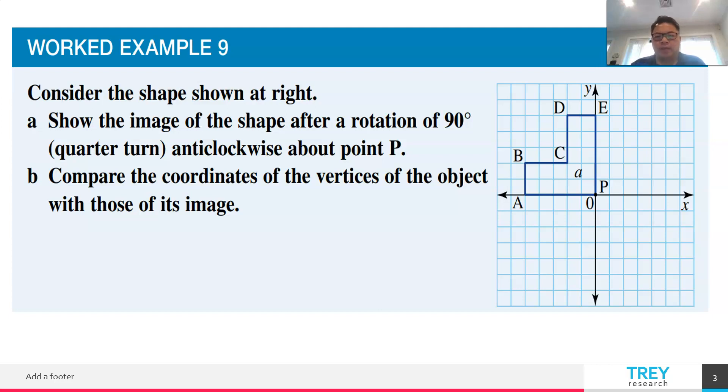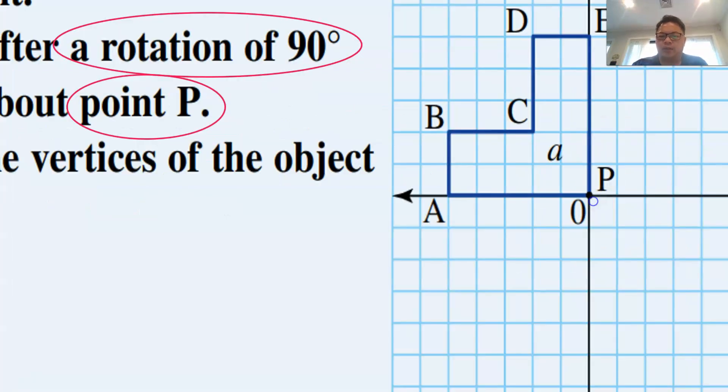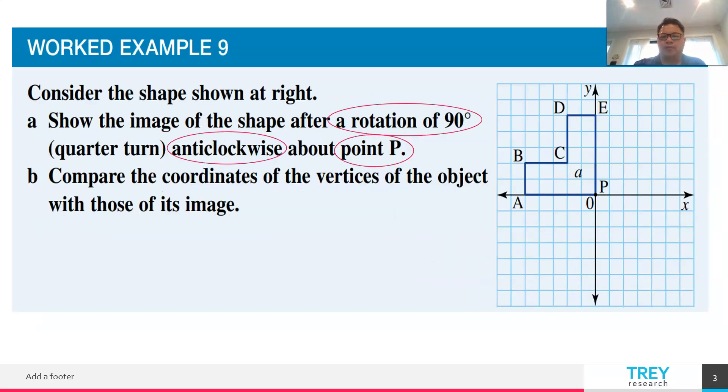I'm going to use this as an example. You are given this special L-shape on the Cartesian grid. We need to rotate. There are a few instructions given to you: a rotation of 90 degrees quarter turn, anticlockwise. There's a very important instruction, anticlockwise, and the reference point is P. As you can see, P is actually located here. That is a very important point for us to refer to.